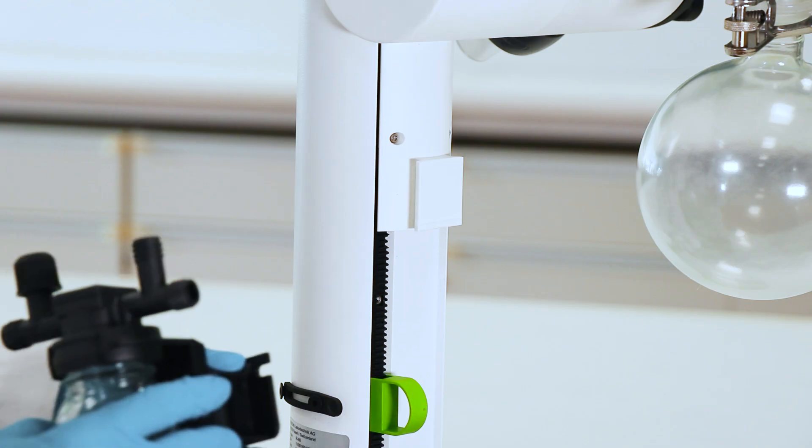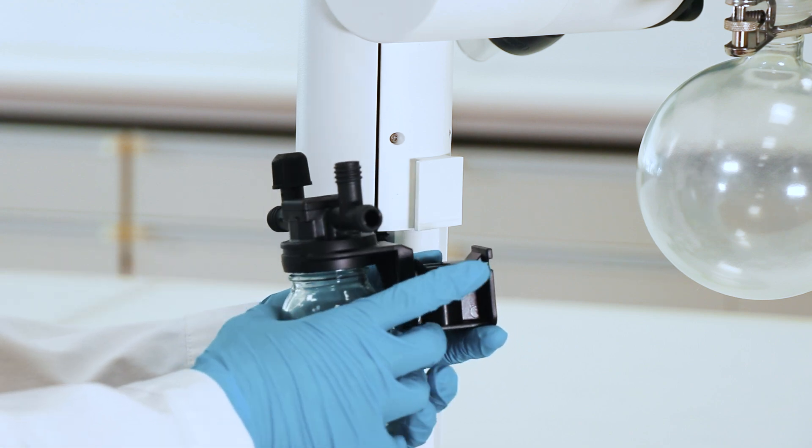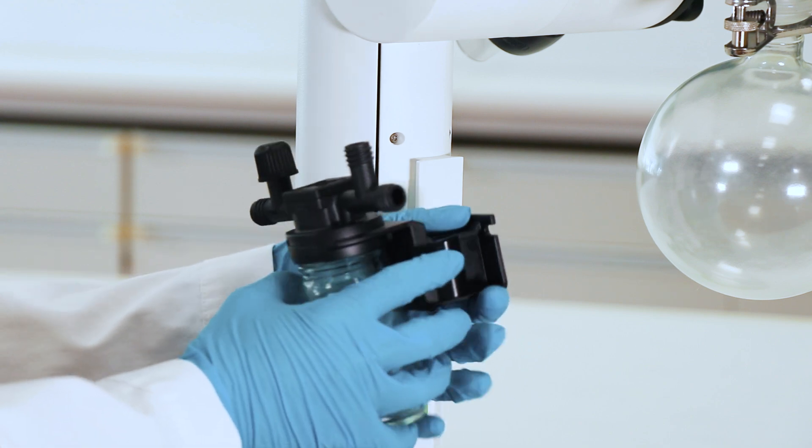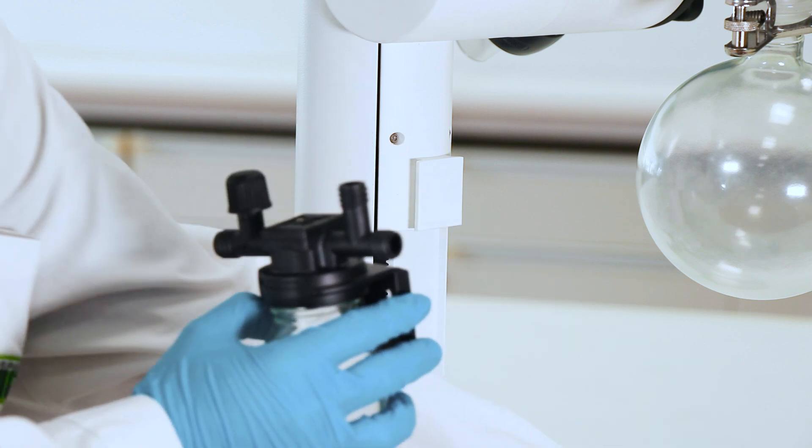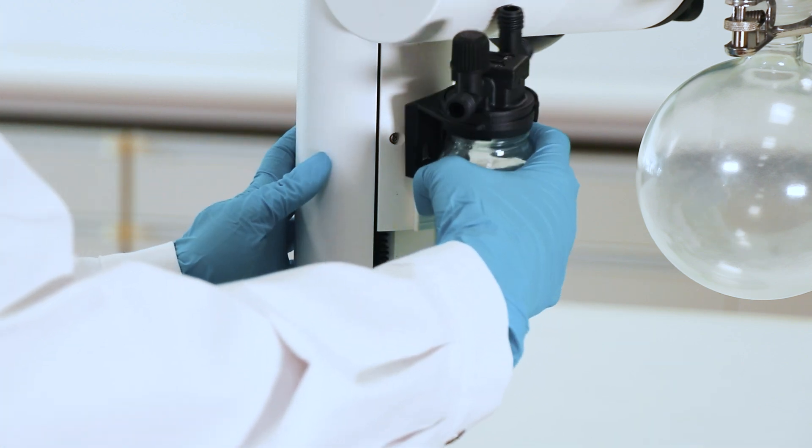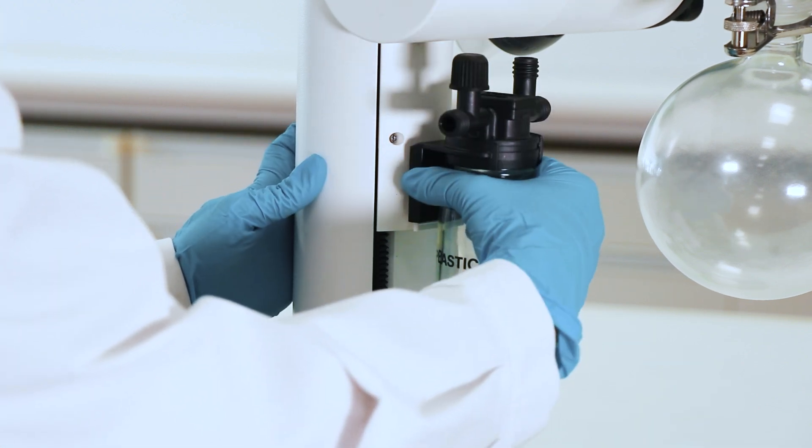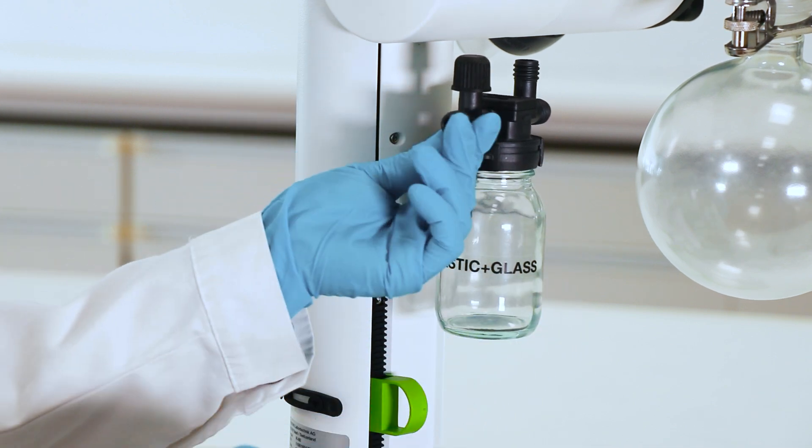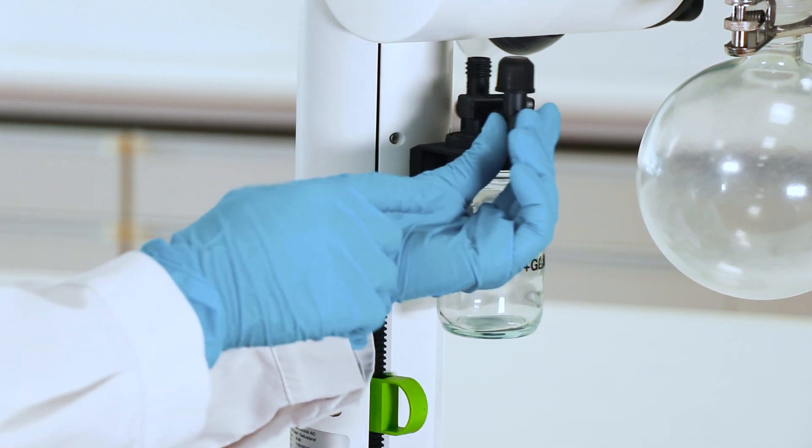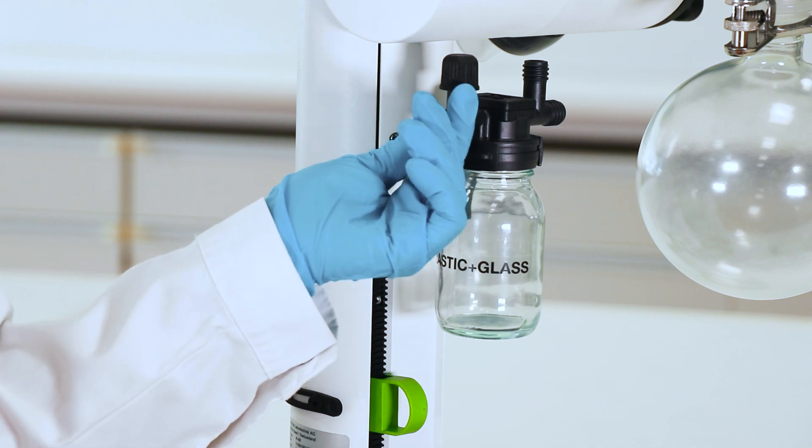So now we're going to mount the wolf bottle onto here. This piece we don't need. That's only if we mounted it onto the vacuum pump. Just take this. And make sure that the pump, it says pump here, faces towards your vacuum pump.